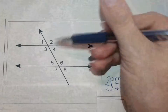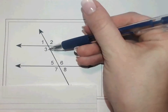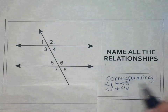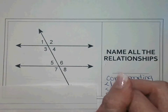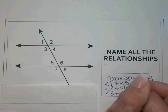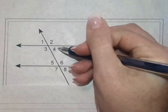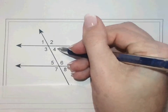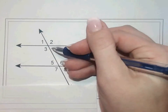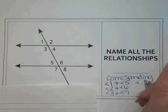Angle three in the bottom left corresponds with angle seven. And angle four, which is in the bottom right, corresponds with angle eight.